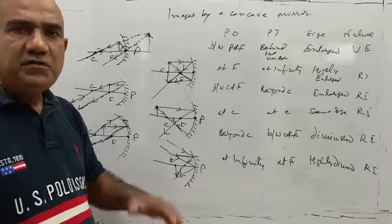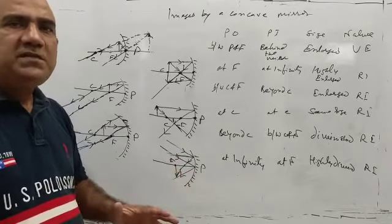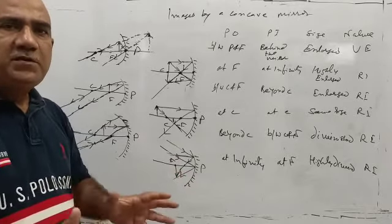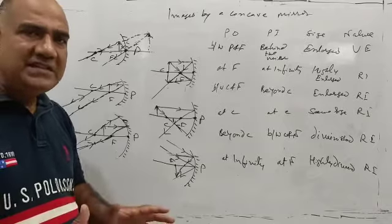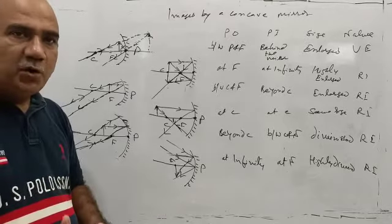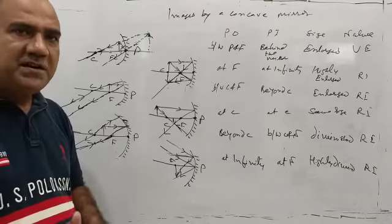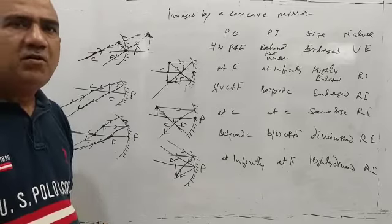That was all about how images at different positions are found — their size and their nature — when the object is kept at different places in front of the concave mirror. Thank you.